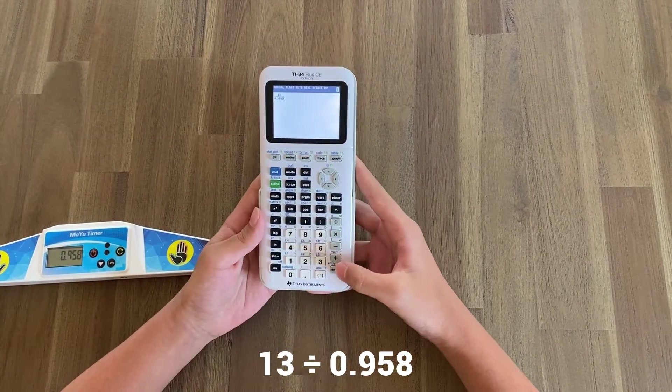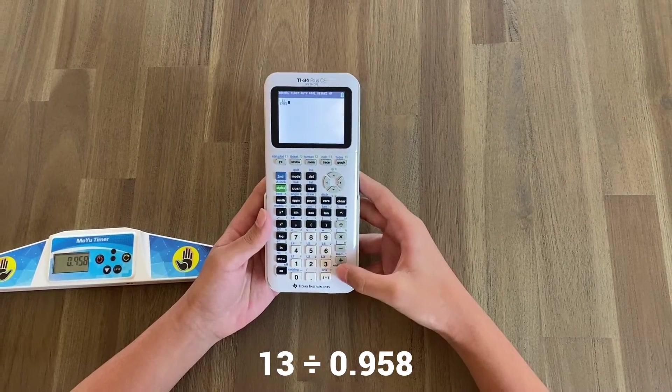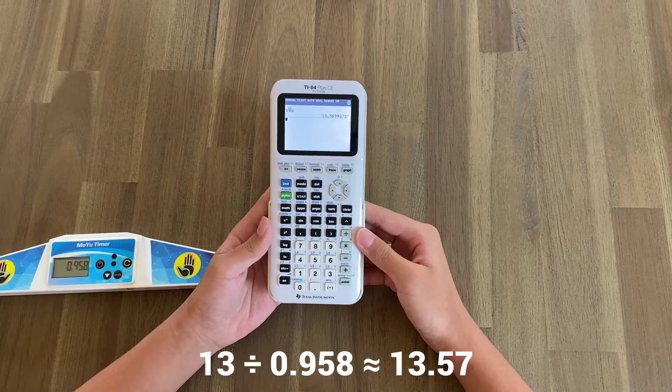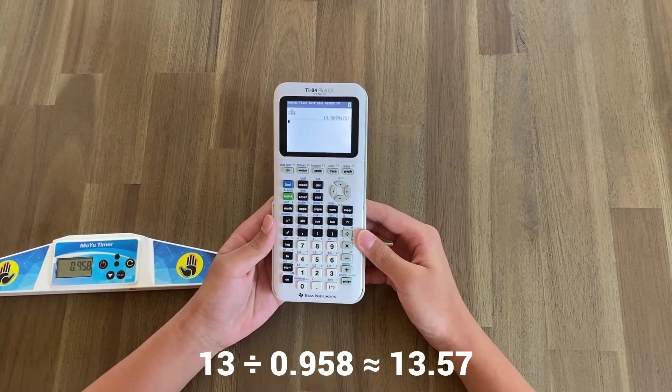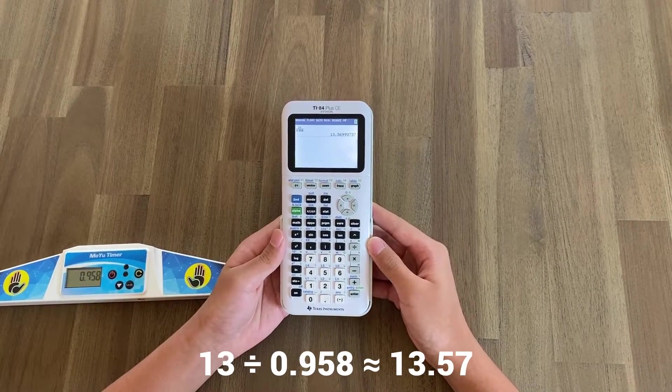And of course, you don't have to use a graphing calculator. I just happen to have one on hand. And when we press enter, we get about 13.57, which means I'm doing approximately 13 or 14 moves in one second.